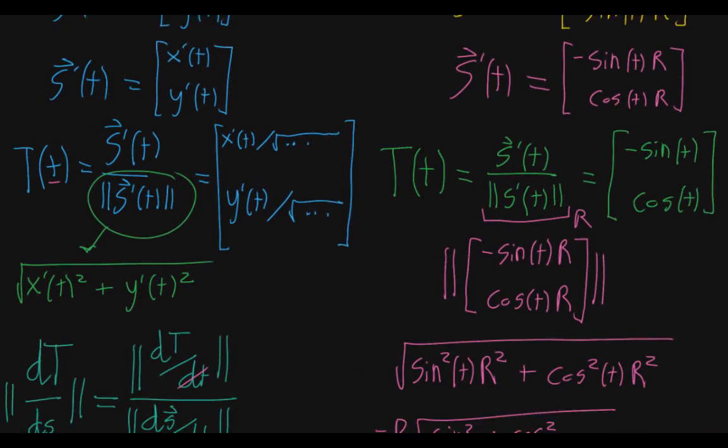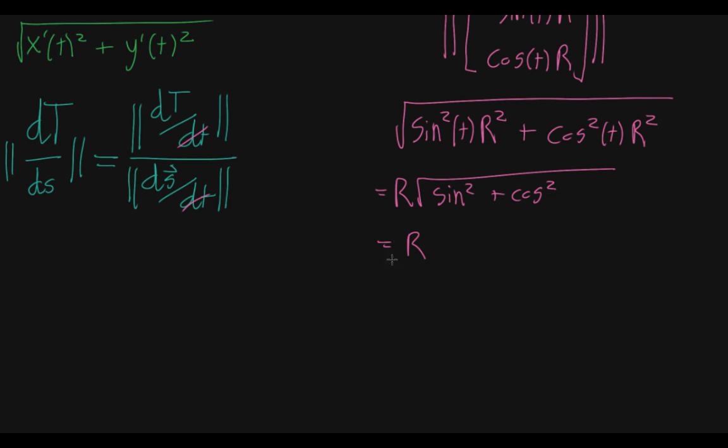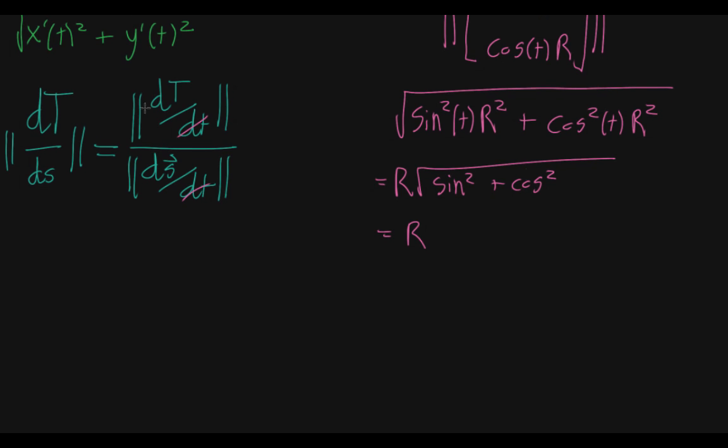What this means in our specific case, if we want to apply this to our circle example, we take dT/dt, the derivative of the tangent vector with respect to the parameter.